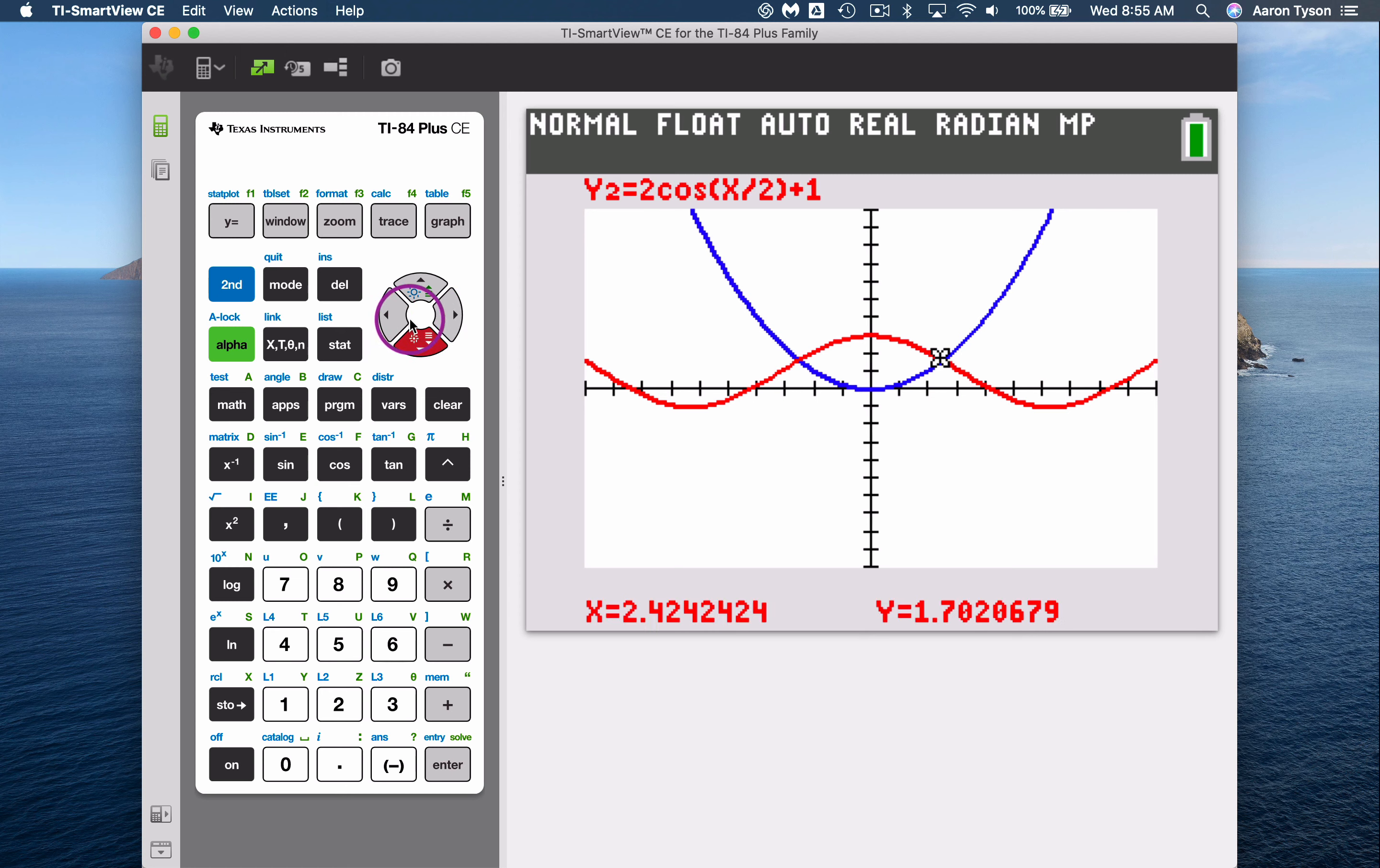Using the up and down key toggles between your functions that you have typed into your y equals. So we're not all that super close. I mean, we're close, but we're not super exact. So I want to find a way to calculate better this point of intersection.